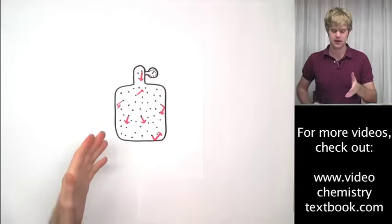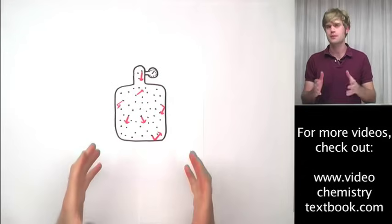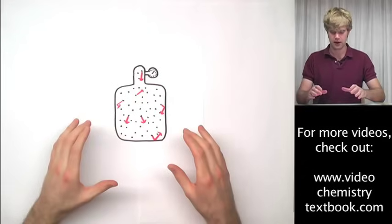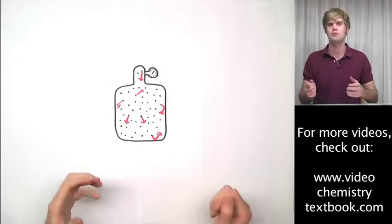Here I have a tank filled with gas and these little dots represent some of the gas particles that would be in this tank. The arrows I put in here because all of these particles are in constant random motion.